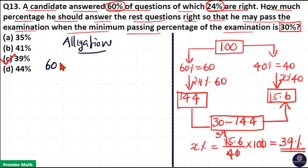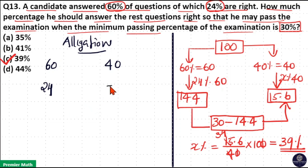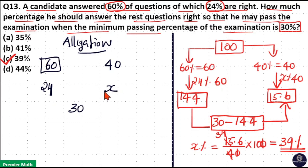In the allegation method: he answered 60% of questions and the remaining unanswered questions are 40%. Out of the 60%, he corrected 24% of the questions. In order to get 30% overall, he should correct x% of the remaining 40 questions. So 24% of 60 and x% of 40 together must equal 30%.